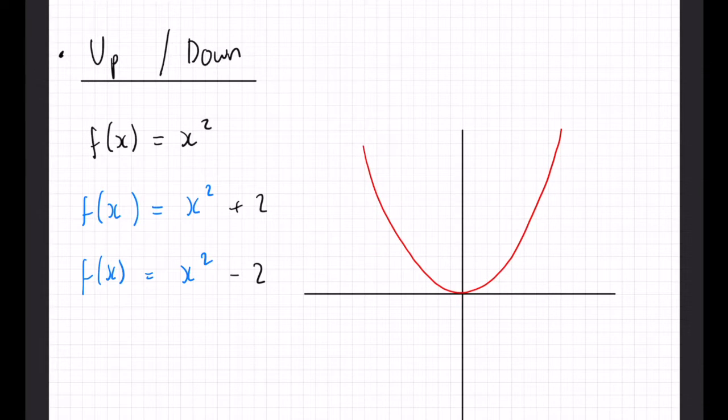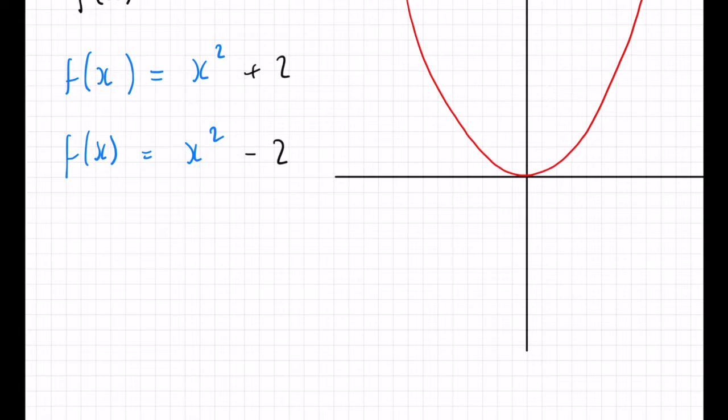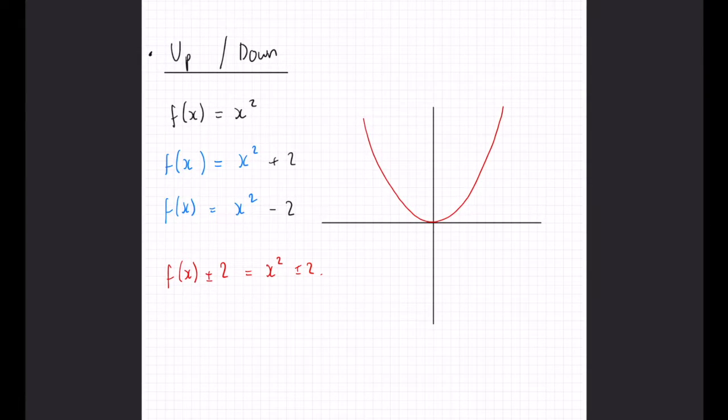In a test, you will probably have the original one already on there and it would just be your job to draw on the new version. In terms of the function itself, it would technically look like f(x) ± 2, and because f(x) is x², that would correspond to just x² ± 2, and that is how you would write that.